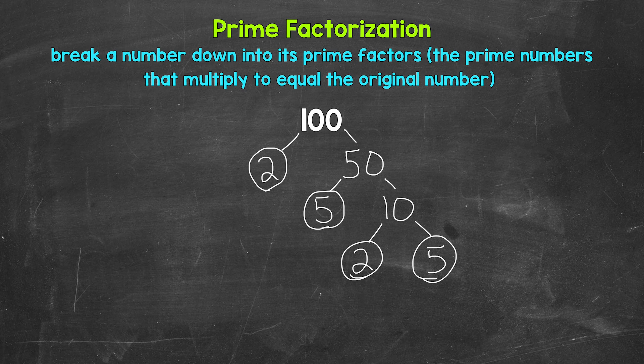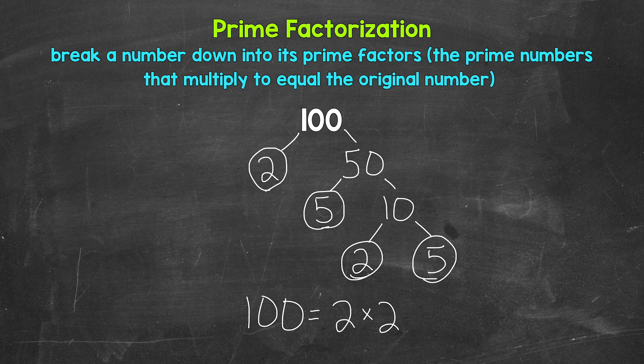And that's the prime factorization of 100. We don't have anything else that we can break down any further — we have all prime numbers. So let's write this out: 100 equals, and then we write out our prime factors in order from least to greatest, and we are multiplying them. So we start with 2 times 2 — we have two 2s — times 5 times 5, so we have two 5s as well. If we have the correct prime numbers, they will multiply to equal our original number, so let's check here.